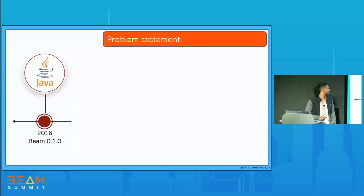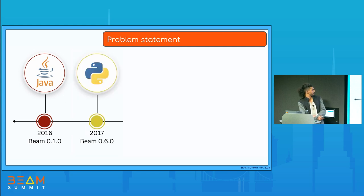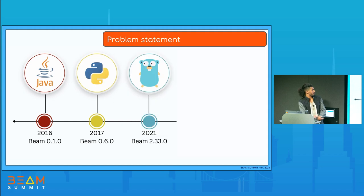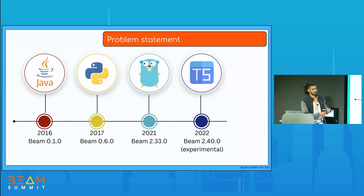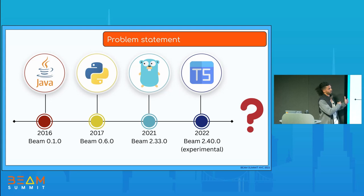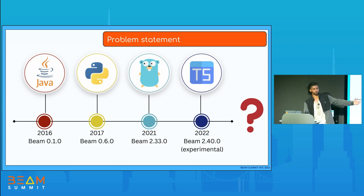Let's look at some history. Beam became available in 2016 with Java. Then a year later, Python came along. A few years later, after being experimental for some time, the Go SDK was officially released. Just last year, we saw a few engineers build a TypeScript SDK in just one week — it wasn't complex, just the simple stuff, but this shows how making an SDK is very doable. It's very plausible that in the future we'll have many more SDKs available for Beam.